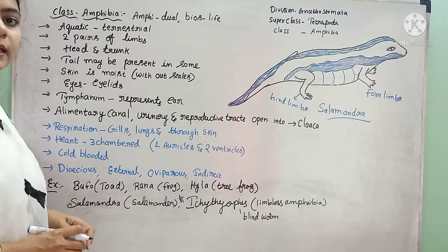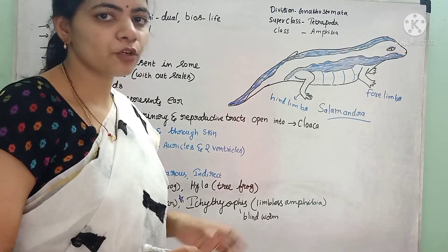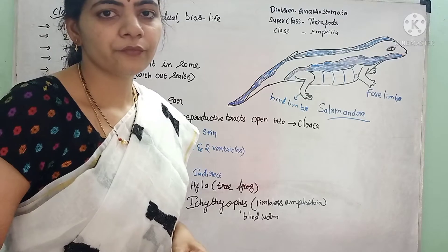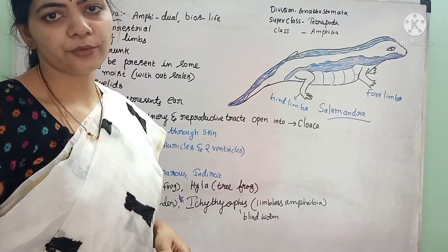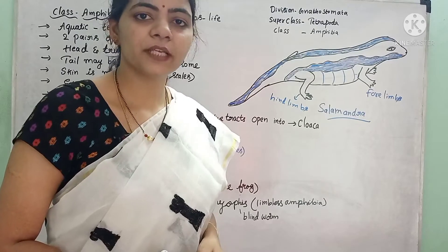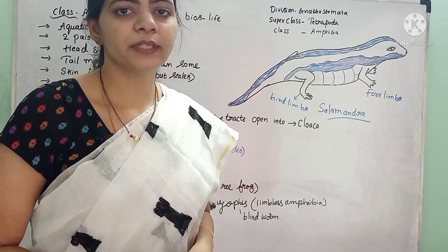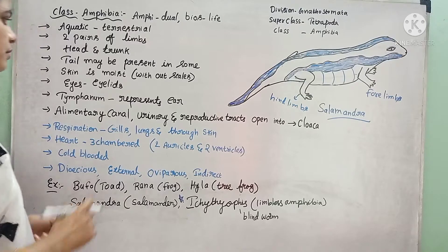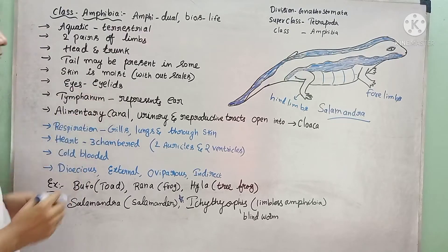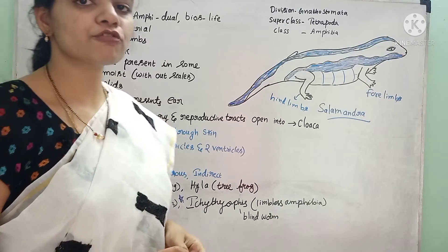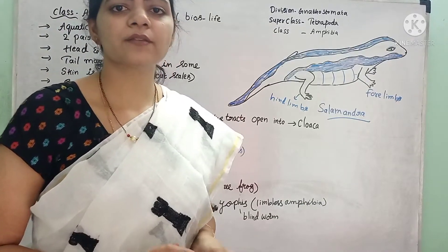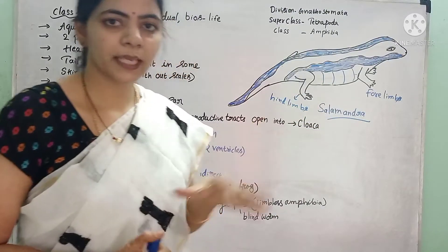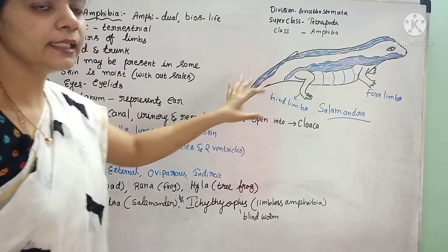In some animals, in the larval stages — if you see frogs, in most of these amphibians the larval stages have a tail. We have studied the life cycle of frog in earlier classes, where the frog larva is called a tadpole larva which consists of a tail. After metamorphosis, in adult frogs the tail is absent. Another feature is that the skin is moist and not covered by any scales. In Pisces, the body of fishes was covered by scales, but in these amphibians those scales are absent and the skin is highly moist.